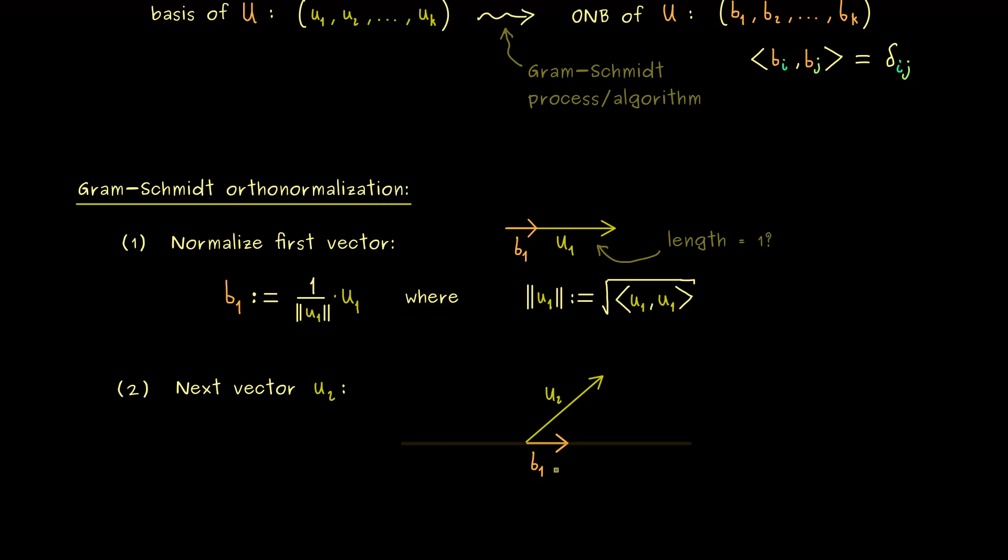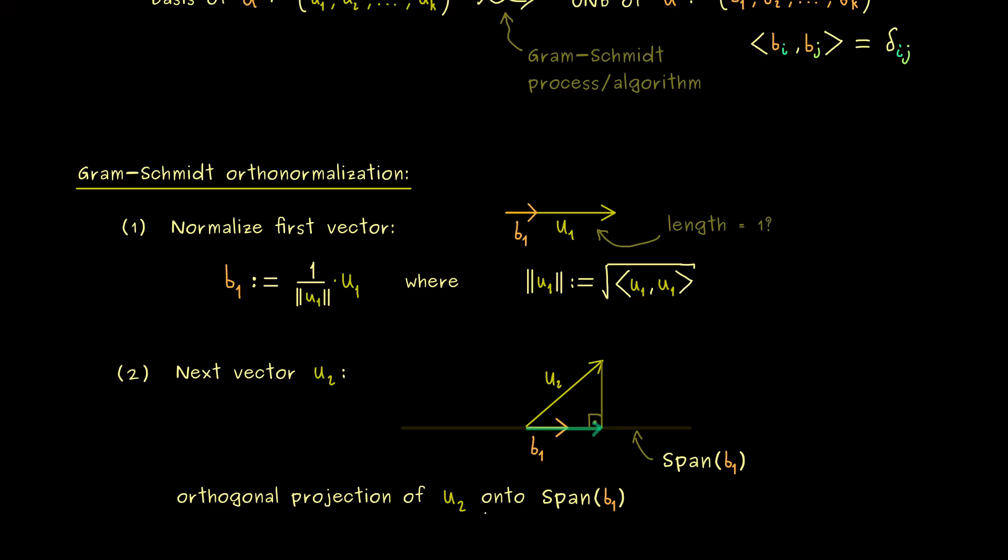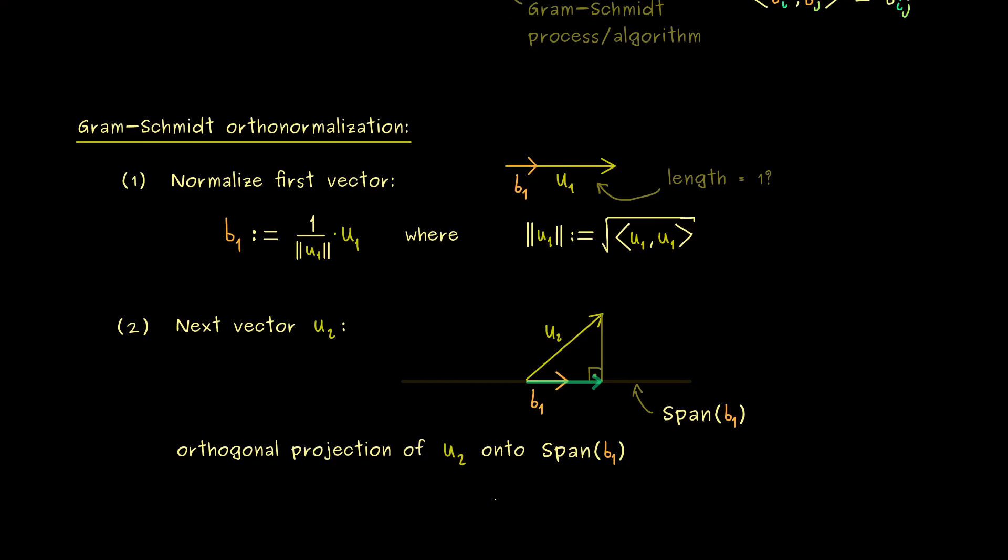Indeed we know they have to span a two-dimensional subspace. However, now we want to find b2, which is orthogonal to b1. And you should already see how we can do that. We just have to calculate the orthogonal projection of u2, and it should be onto the one-dimensional subspace spanned by b1. So in short, this is just the span of b1. Hence if we do that, we get this vector here. This is the orthogonal projection and we know how to calculate this one.